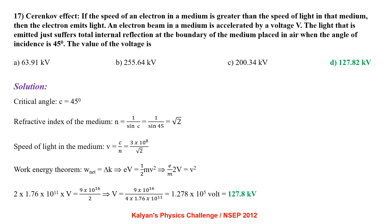Cherenkov effect: if the speed of an electron in a medium is greater than the speed of light in that medium, the electron emits light. An electron beam is accelerated by voltage V and the emitted light just suffers total internal reflection at the boundary when angle of incidence is 45°. Critical angle = 45°, so refractive index n = √2. Speed of light in medium = c/√2. Applying work-energy theorem: 2 × 1.76×10¹¹ × V = 9×10¹⁶/2, giving V = 127.8 kV.